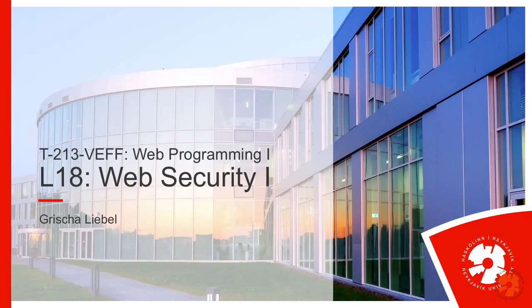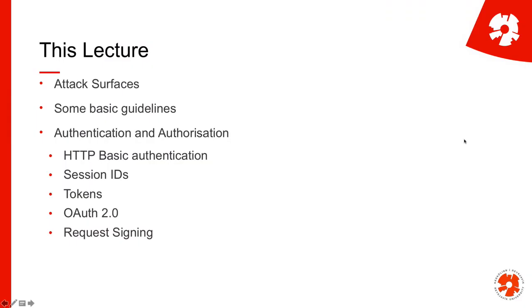Welcome to lecture 18 where we start going into the security topic in the web area. We start off discussing what kind of attack surfaces there are in web applications, how you can attack a web application, some basic guidelines on security, and then we dive into the topic of authentication and authorization — the idea that you should not be able to access everything in an application unless you have sufficient rights. In lecture 19 we go into vulnerabilities and attacks, looking at hackers trying to get into an application because it's not secure.